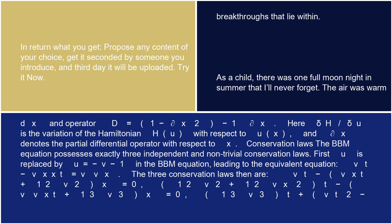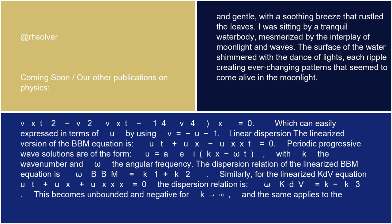(1/3·v³)t + (vt² - vxt² - v²·vxt - 1/4·v⁴)x = 0, which can easily be expressed in terms of u by using v = -u - 1.